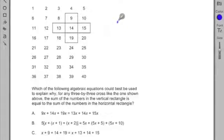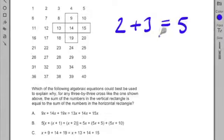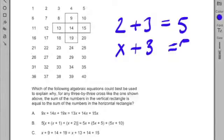If I did 2 plus 3 equals 5, this would be an equation. If I turn this into x plus 3 equals 5, I've just turned it into an algebraic equation.